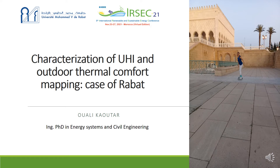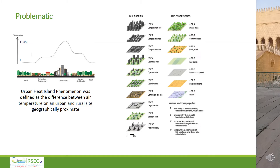One of the most documented phenomena of the urban microclimate is the urban heat island. It contributes to global warming and leads to an adaptation of the city's sustainable planning policy. The consequences of urban heat island remain challenging to predict and very variable according to climate conditions. This phenomenon was defined as the difference between the air temperature on an urban and rural site geographically approximated.